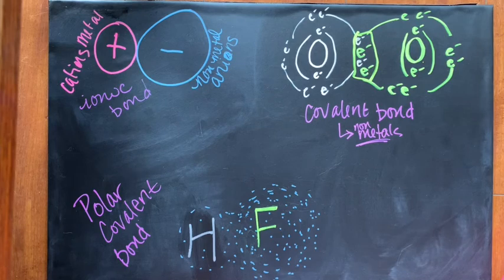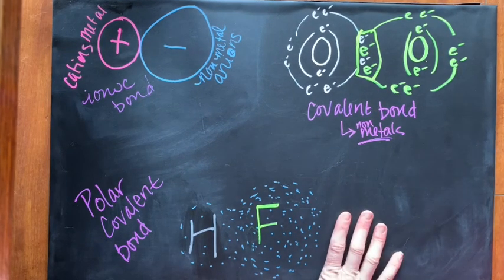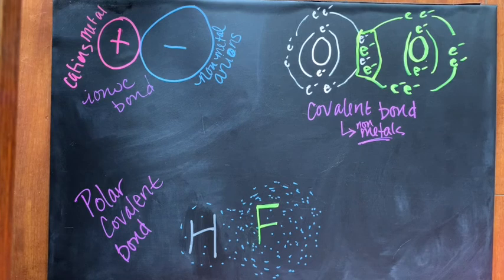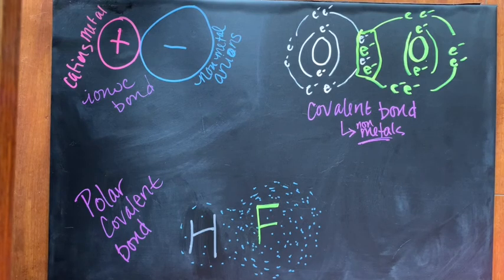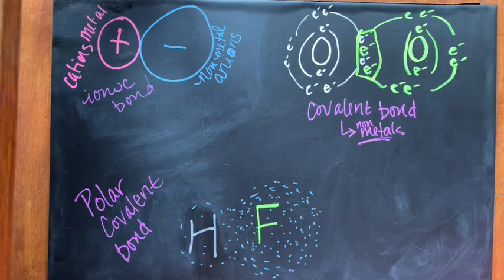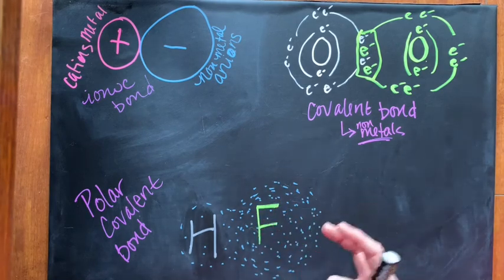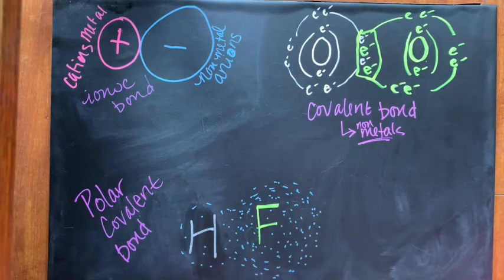Next in our chapter we start talking about polar covalent bonds, where the atoms are shared but not very equally. With hydrogen and fluorine, fluorine has seven electrons in its outermost energy level, so it's going to have a really high pull for the electron.